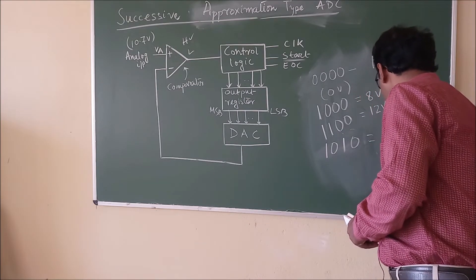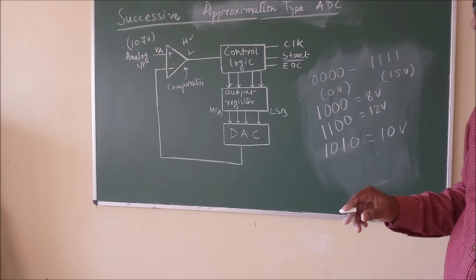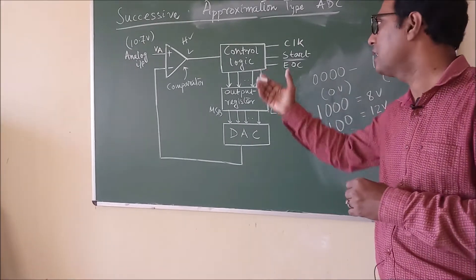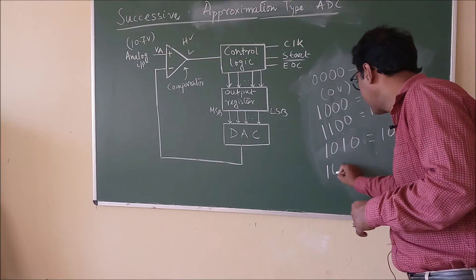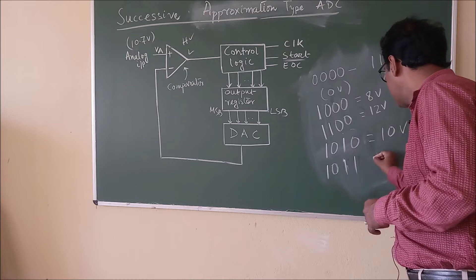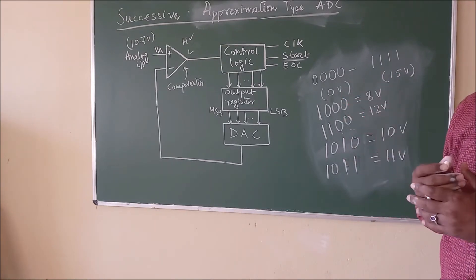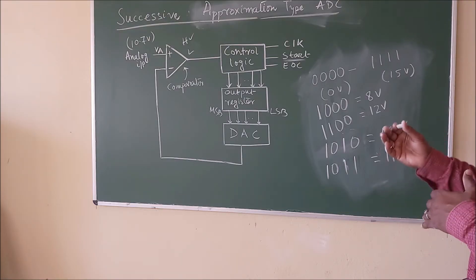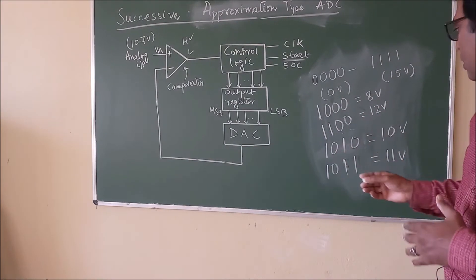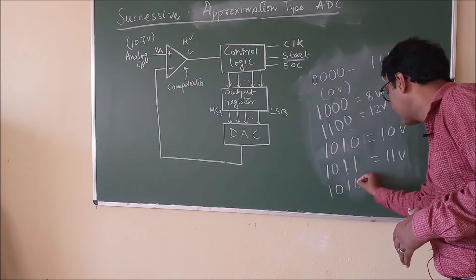So 1010 means 10 volts. This 10 volts is applied in the comparator alongside 10.7V. The analog input is high, so the output of the comparator is high and the control logic retains that bit. So 1011 means 11 volts. Once again it is compared and the comparator output is low because the DAC output is high and is applied at the inverting terminal. So when it is low, the control logic resets that particular bit.